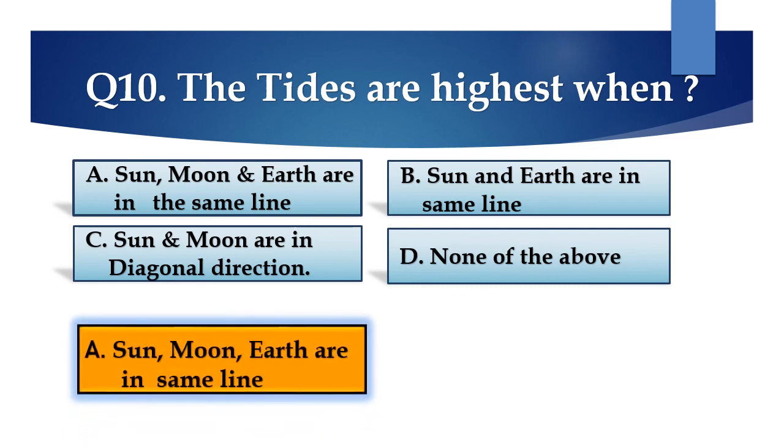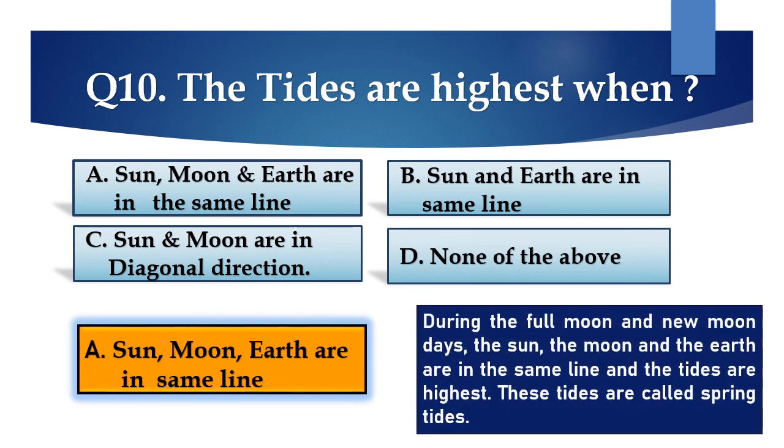And the answer is A. Sun, moon and the earth are in the same line. During the full moon and new moon days, the sun, the moon and the earth are in the same line, and the tides are highest. These tides are called spring tides.